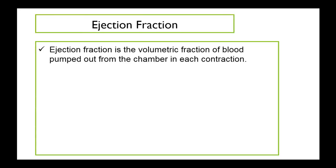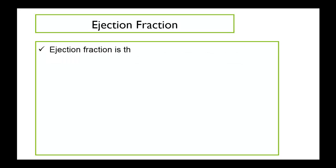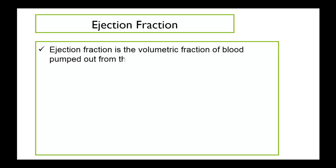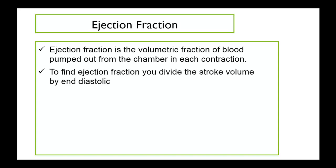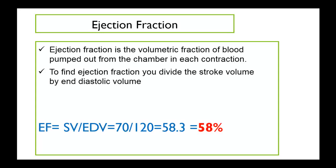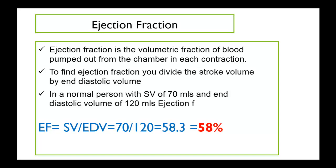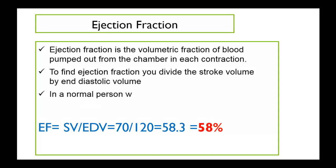Another concept is the ejection fraction. Ejection fraction is the volumetric fraction of blood pumped out from the chambers in each contraction. To calculate ejection fraction, you divide the stroke volume by the end-diastolic volume. In our case, the stroke volume of 70 milliliters divided by the end-diastolic volume of 120 milliliters gives an ejection fraction of about 58 percent.